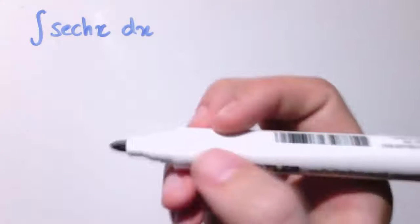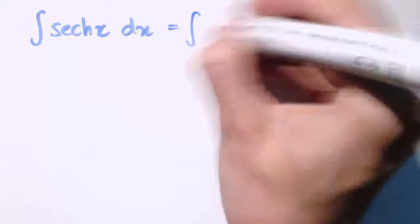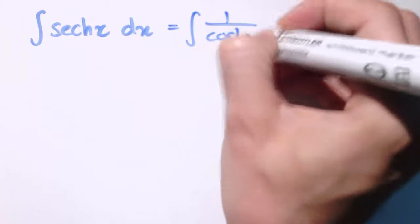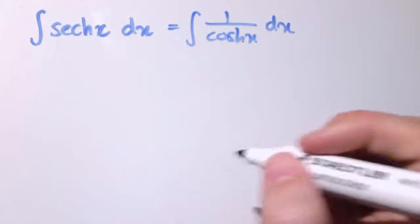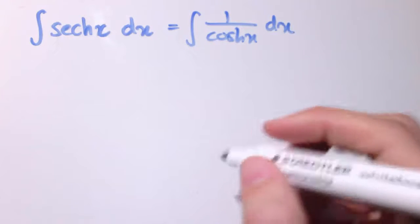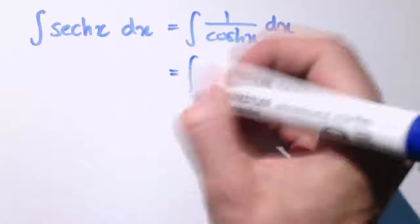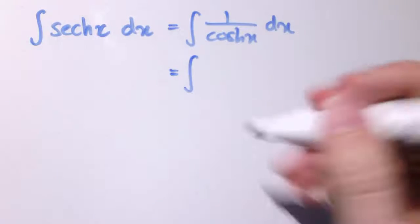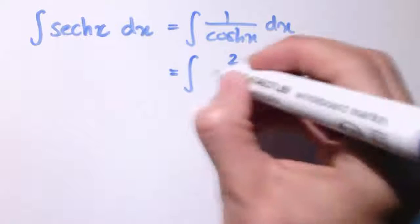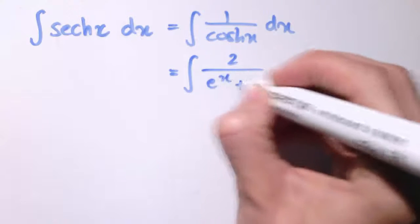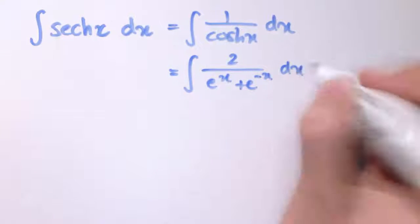We can do the same thing with sech(x). Now remember, sech(x) is 1 over cosh(x). So when I put the definition of cosh(x) in its exponential form, I'm going to turn it upside down, take the reciprocal, so we're going to have 2 divided by e^x plus e^(-x), that's just the reciprocal of cosh(x).